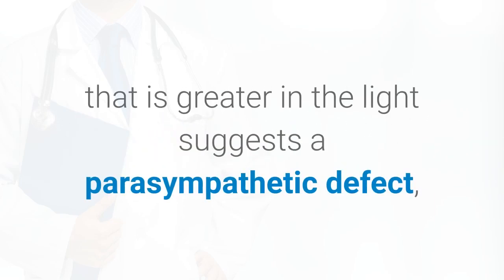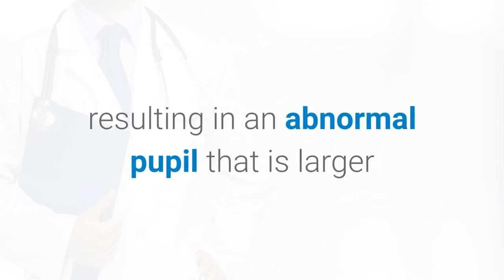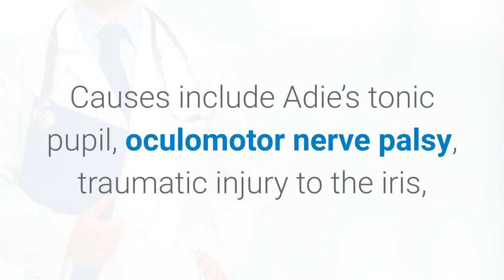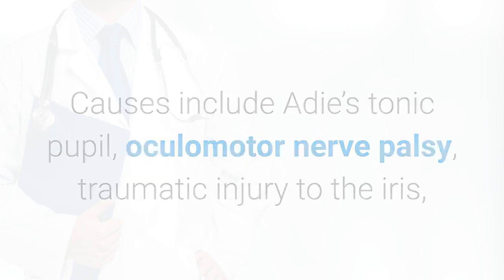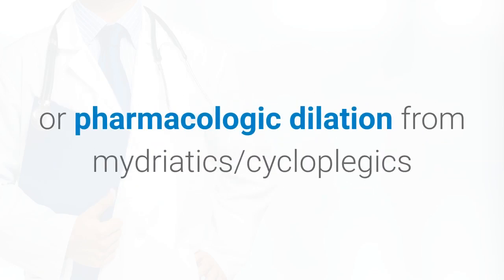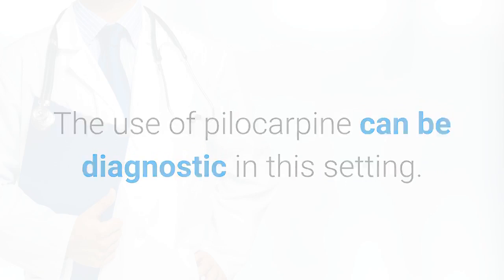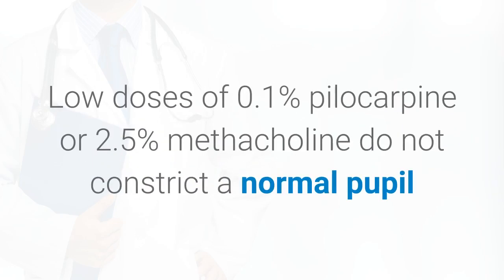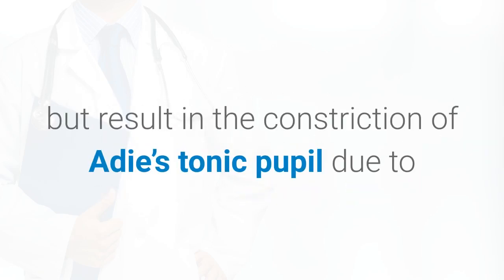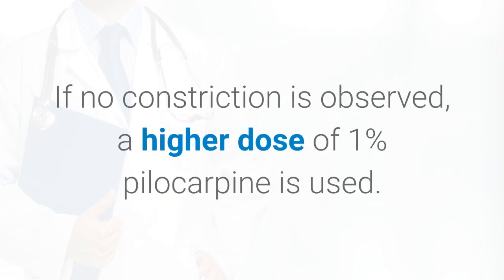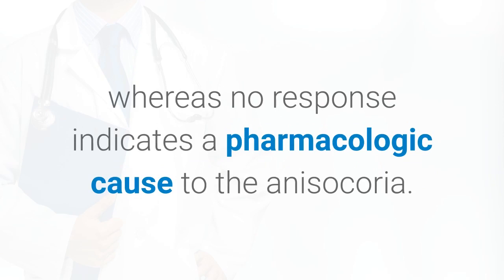Anisocoria that is greater in the light suggests a parasympathetic defect, resulting in an abnormal pupil that is larger or unable to constrict in response to a light stimulus. Causes include Adie's tonic pupil, oculomotor nerve palsy, traumatic injury to the iris, or pharmacologic dilation from mydriatics, cycloplegics, atropine, tropicamide, cyclopentolate, or cocaine. Low doses of 0.1% pilocarpine or 2.5% methacholine do not constrict a normal pupil but result in constriction of Adie's tonic pupil due to hypersensitivity from upregulation of cholinergic receptors. If no constriction is observed, a higher dose of 1% pilocarpine is used; pupillary constriction then suggests an oculomotor nerve palsy, whereas no response indicates a pharmacologic cause.